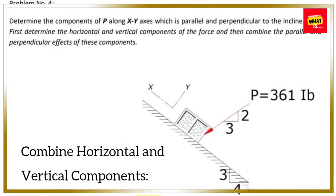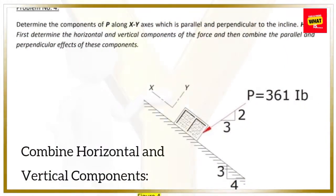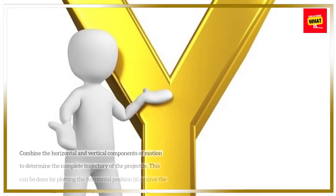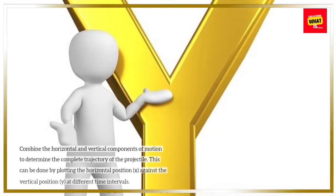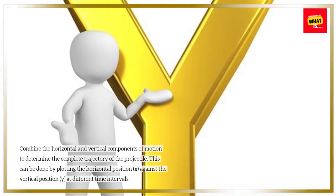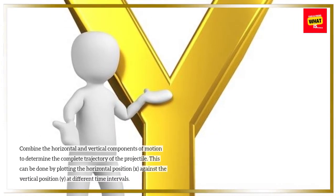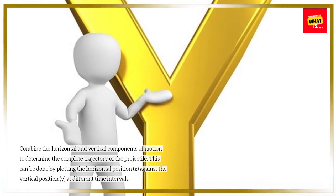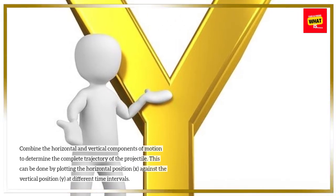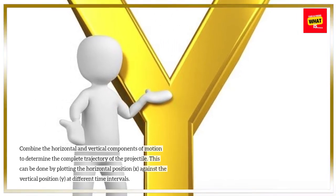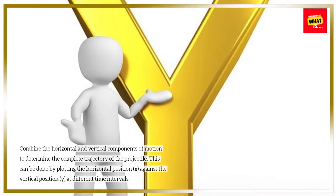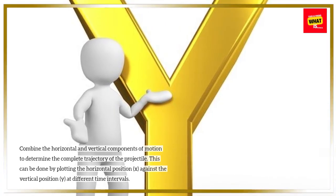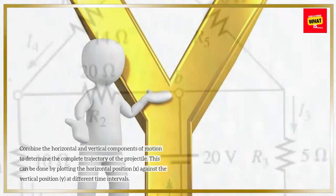Combine horizontal and vertical components of motion to determine the complete trajectory of the projectile. This can be done by plotting the horizontal position, x, against the vertical position, y, at different time intervals.